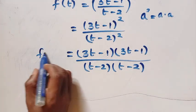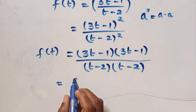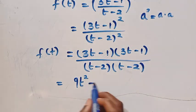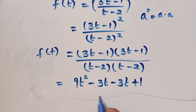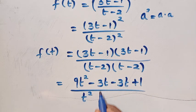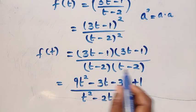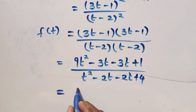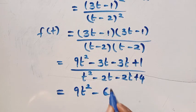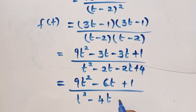Expanding the numerator: 3t times 3t gives 9t squared; 3t times minus 1 gives minus 3t; minus 1 times 3t gives minus 3t; and minus 1 times minus 1 gives plus 1 — so minus 3t minus 3t equals minus 6t. For the denominator: t times t is t squared; t times minus 2 is minus 2t; minus 2 times t is minus 2t; and minus 2 times minus 2 is plus 4. So f of t equals (9t squared minus 6t plus 1) over (t squared minus 4t plus 4).